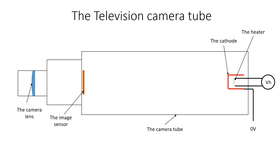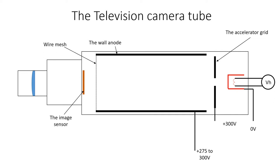When the cathode becomes red hot, then electrons are emitted from the surface of the cathode into the vacuum close to the cathode. Electrons are subatomic particles and cannot actually be seen, but they are represented here by red dots. A metal electrode with a hole in the middle is mounted inside the tube and connected to a positive voltage of about 300 volts with respect to the cathode. This electrode was called the accelerator grid. A metal cylinder with a wire mesh at the end was fitted within the tube and this was called the wall anode and was connected to between 275 and 300 volts with respect to the cathode.